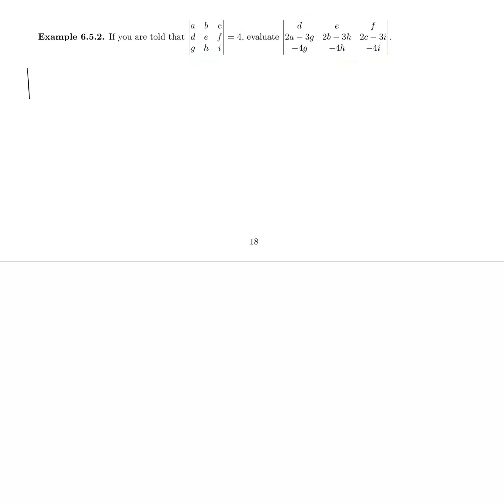So let's start by recopying our determinant. So we've got the determinant of DEF, 2A minus 3G, 2B minus 3H, 2C minus 3I, and minus 4G minus 4H minus 4I.